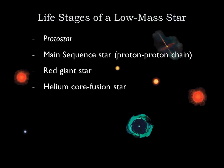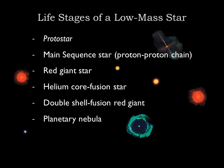The core shrinks and eventually gets hot enough to fuse helium into carbon — it's now a helium-fusing star. Eventually, the core will be mostly carbon surrounded by a helium shell. When that shell begins to fuse, we have a double shell burning red giant. Eventually, all the fusion ends and the star ejects its outer layers as a planetary nebula, leaving behind a white dwarf — the leftover core of the star.